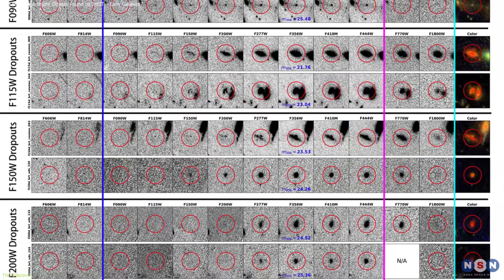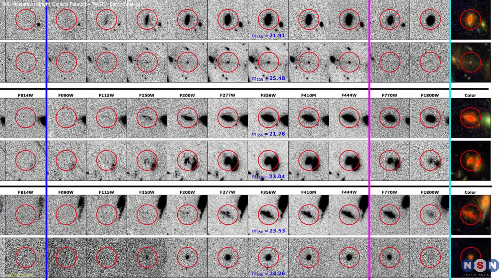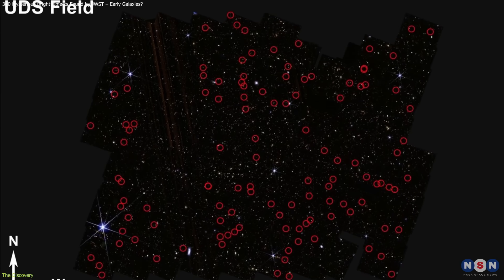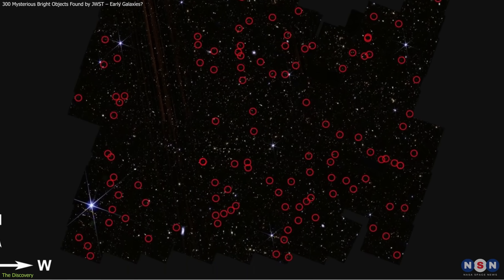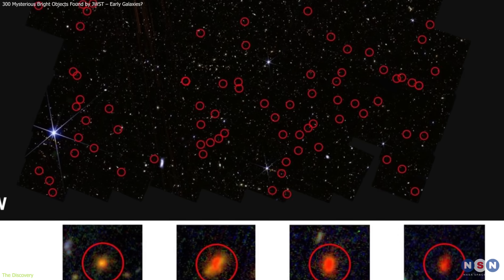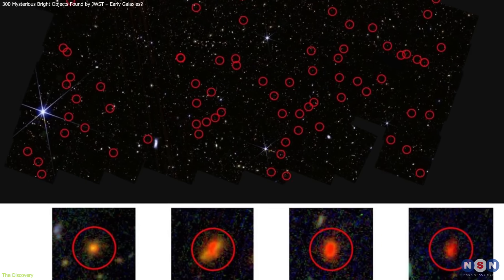This method compares the observed light across multiple wavelengths to theoretical galaxy models. Of the 137 objects with both NIRCAM and MIRI coverage, about two-thirds appear to be nearer galaxies with redshifts between 1 and 4.